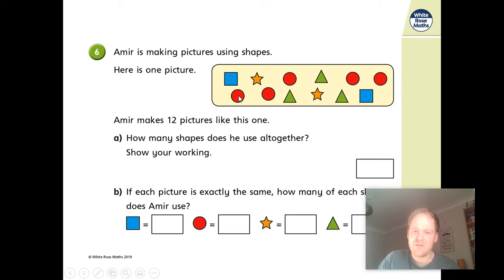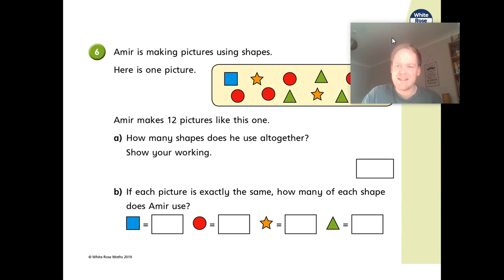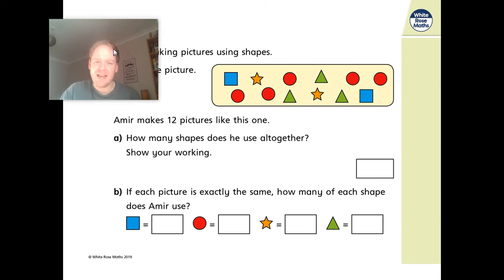Eight, nine, 10, 11, 12. You've got 12 times 12. Write out the sum. Write out the answer. If each picture is exactly the same, how many of each shape does Amir use? So you have to count up each individual one now. So blue squares, there are two times 12 pictures, red circles times 12, et cetera, et cetera.